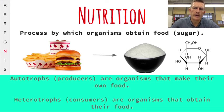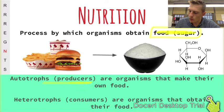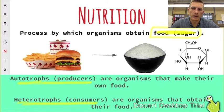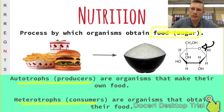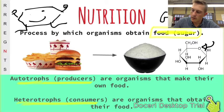Nutrition is the process by which organisms obtain food, and food in this class means sugar. Organisms get sugar in different ways: autotrophs can produce their own food automatically — plants and some bacteria and protozoa. We humans are heterotrophs or consumers; we have to consume food from the environment, ingest it, and digest it. The chemical formula for sugar — glucose — will be our friend, and we'll obtain energy by breaking its bonds.